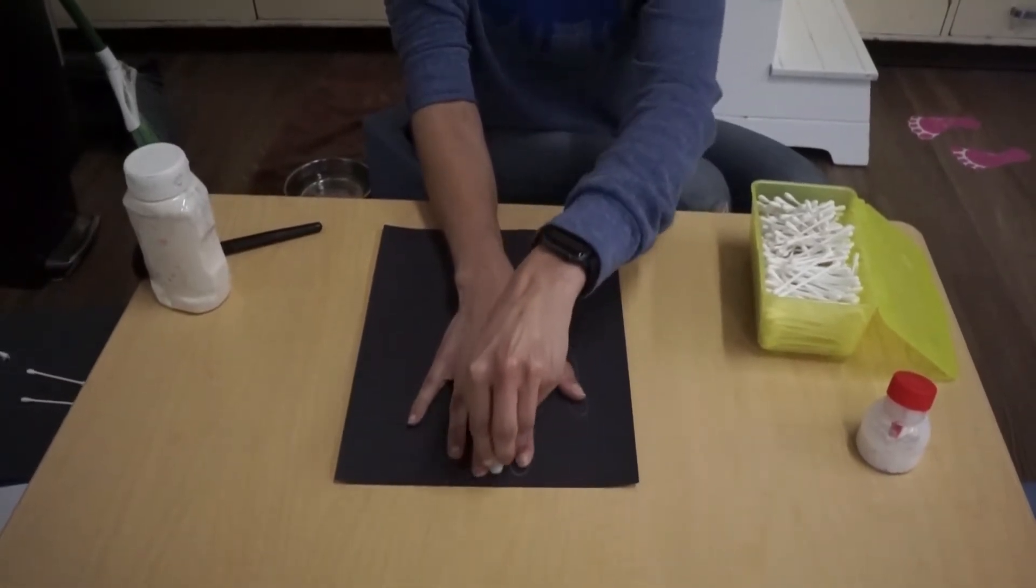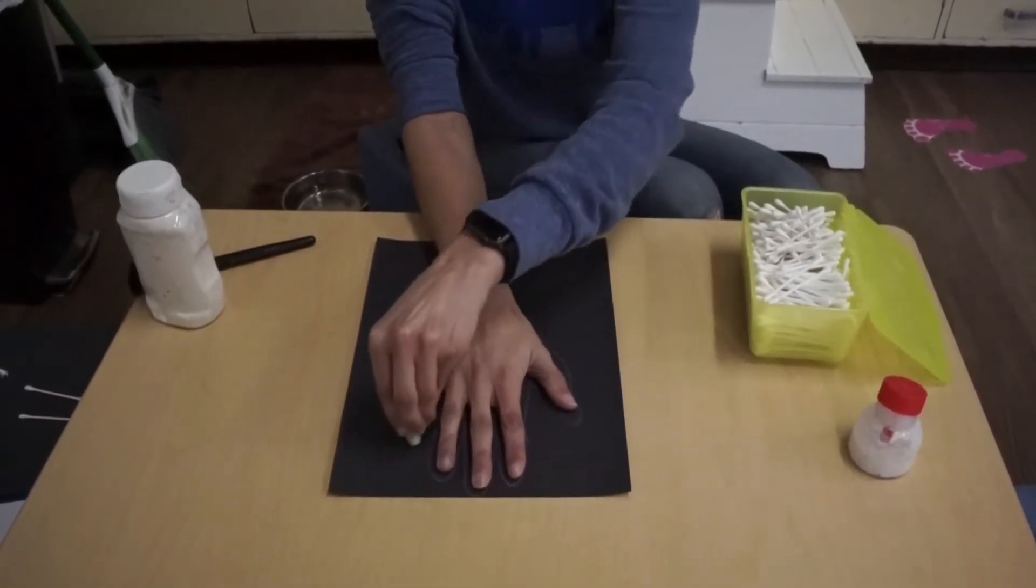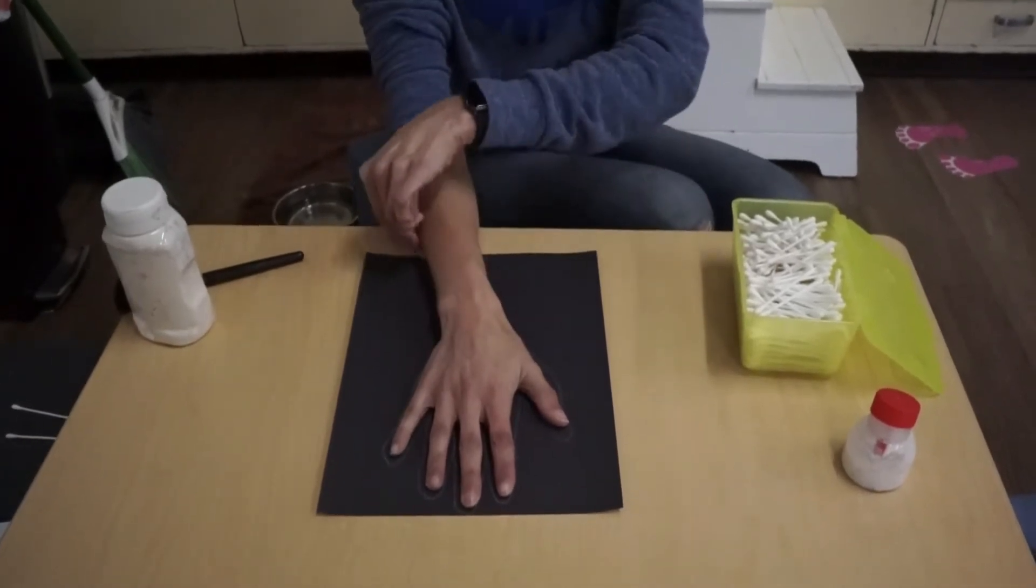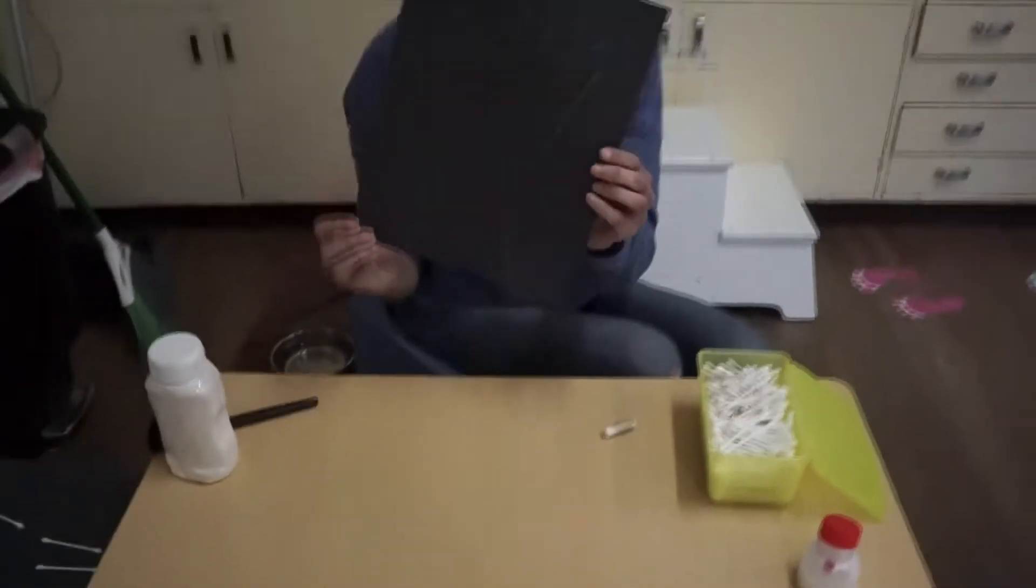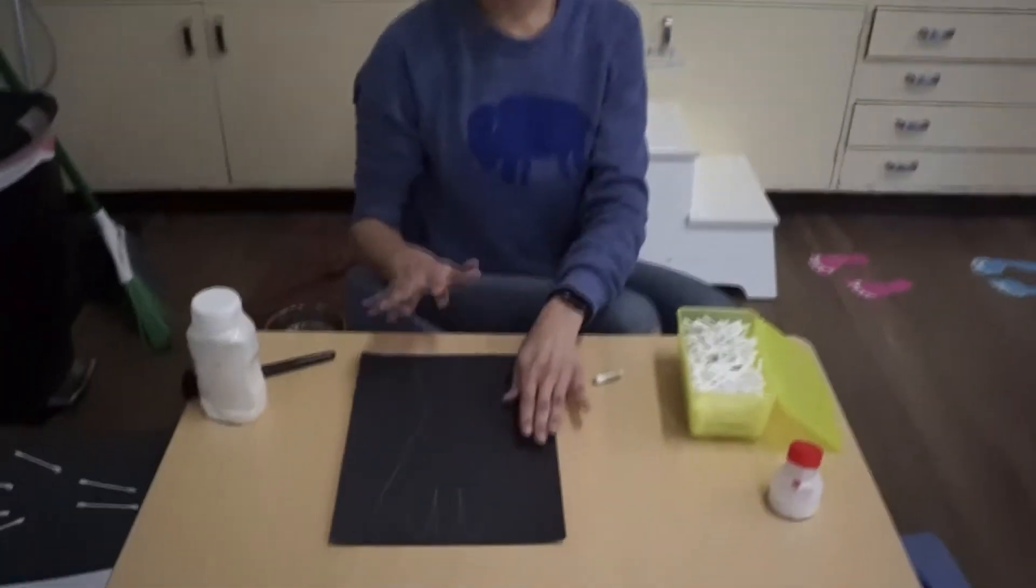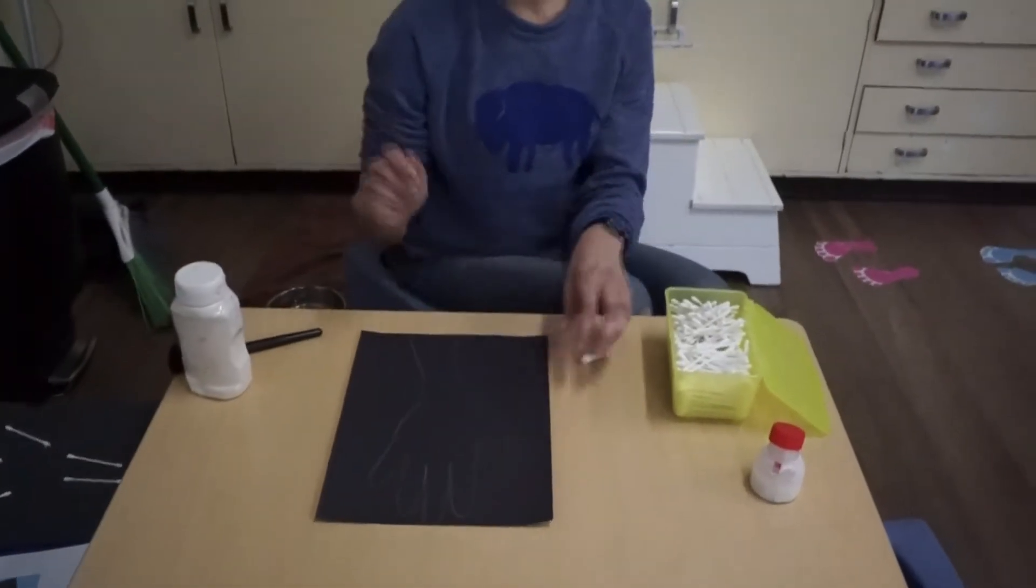I'm going to trace each of my fingers onto my paper just like that. So you have an outline of your hand. If you use paint then it would be all white where that is.